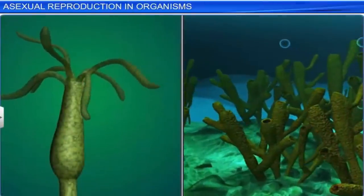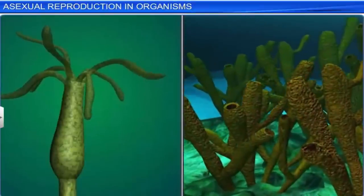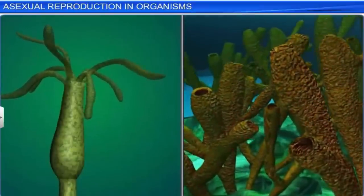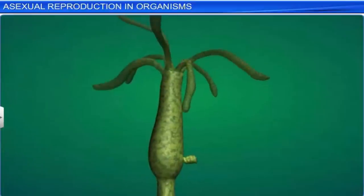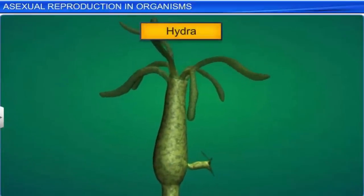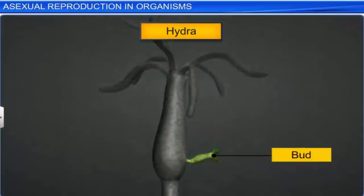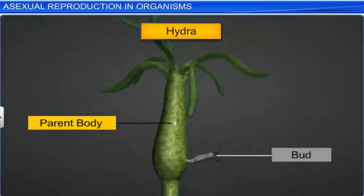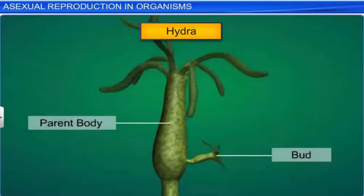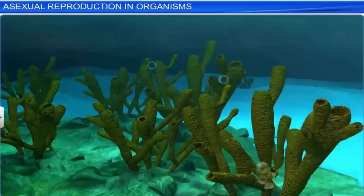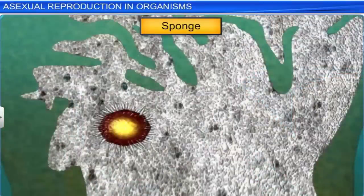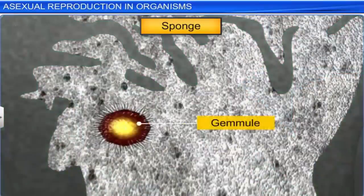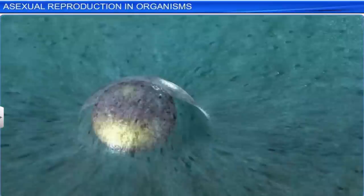Apart from fungi, we also see asexual reproductive structures in certain members of kingdom Animalia. In the case of hydra, buds which develop on the parent body serve as a means of reproduction. Likewise, the sponge produces internal buds called gemmules that aid in asexual reproduction.